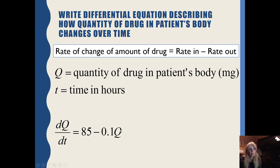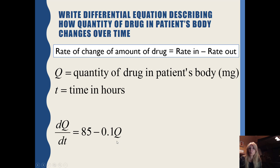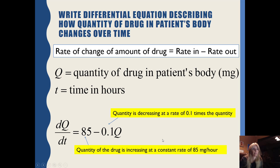Remember this is a function. So my differential equation has dq/dt, where the variable on the bottom is the variable in the function — that's really q of t. So quantity of the drug increasing at 85 milligrams per hour, quantity decreasing at 10% of the quantity that is there at a particular time.